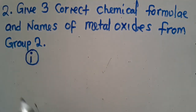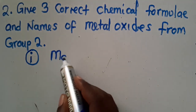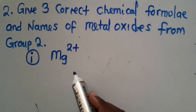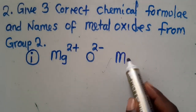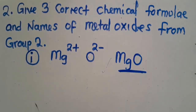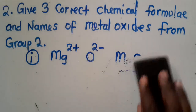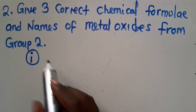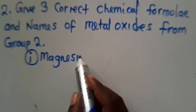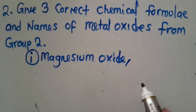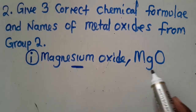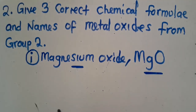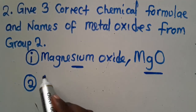You can pick magnesium. Magnesium is in group 2 — valence 2+. Oxygen is in group 6 — valence 2−. They cancel out, so what you form is magnesium oxide, MgO. Just like that — this is a metal oxide. You give the name magnesium oxide and the chemical formula MgO.